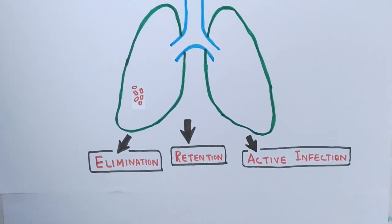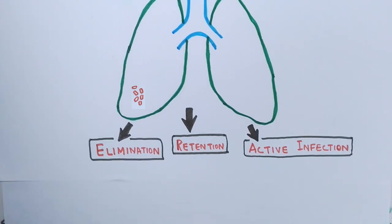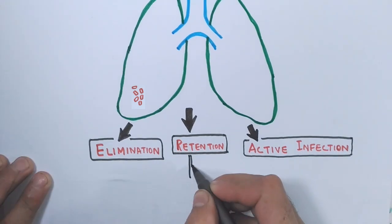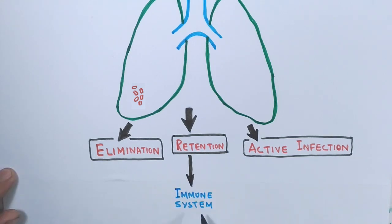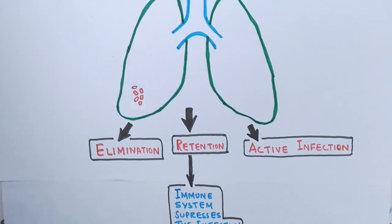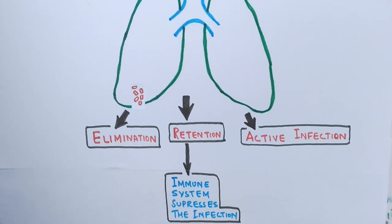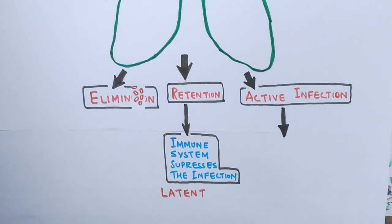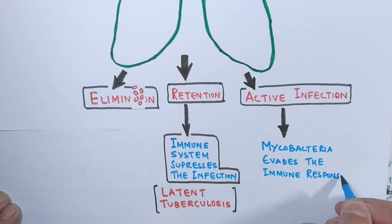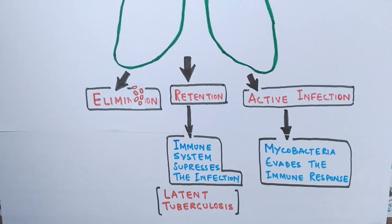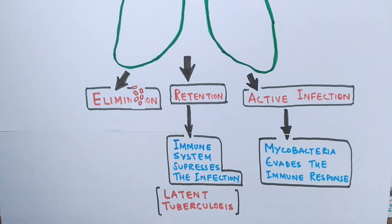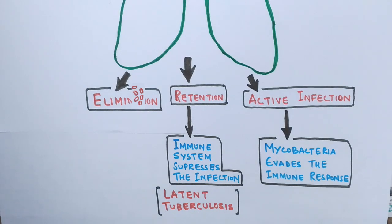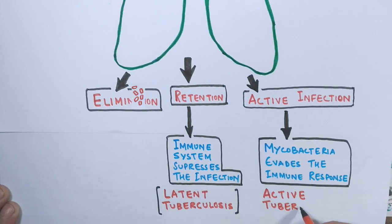In the elimination phase, our immune system completely eliminates the infection. In the retention case, the immune system suppresses the infection but the bacteria remains viable — in this case we say it is latent tuberculosis, which is mostly asymptomatic. While in the active phase, the Mycobacterium evades the immune response and spreads the infection in the lung tissue, and at that time we say it is active tuberculosis.